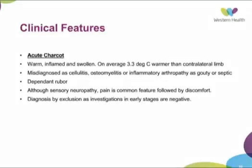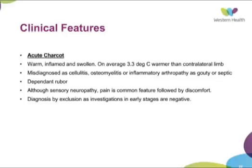Clinically, some people describe an acute Charcot or a chronic Charcot. The first presentation of acute Charcot is a warm, hot, swollen foot and ankle area — on average 3.3 degrees centigrade warmer than the contralateral limb. Because it's warm, hot and swollen, patients are often misdiagnosed as having cellulitis, osteomyelitis, or gout or septic arthritis. There are some clinical tests you can do, such as checking the dependent rubor, to determine if it's cellulitis versus Charcot.